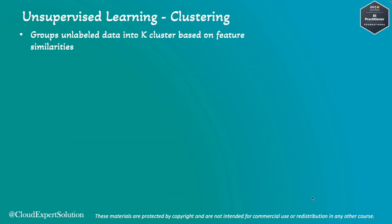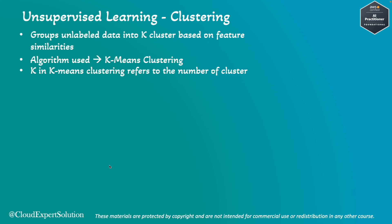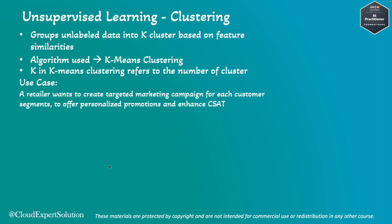Let's review unsupervised learning clustering. Under clustering, we group unlabeled data into K clusters based on the features or similarities of the objects. The algorithm used is called K-means clustering, where K represents the number of clusters. For example, let's assume a retailer wants to create targeted marketing campaigns for each customer segment, offering personalized promotions to enhance customer satisfaction. The goal is to segment customers into different groups based on their purchasing behavior.